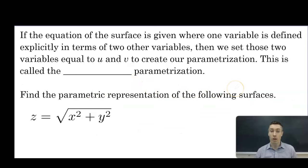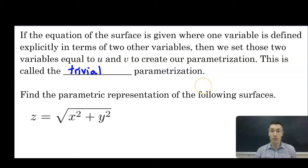Our main goal in this video is coming up with our own parameterizations. If the equation of the surface is given where one variable is defined explicitly in terms of two other variables, then we set those two variables equal to u and v to create our parameterization. This is called the trivial parameterization — we're just substituting two of the three variables with u and v, and defining the third one in terms of u and v based on our substitution.